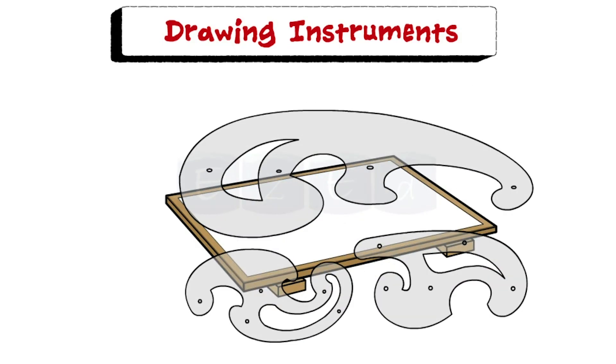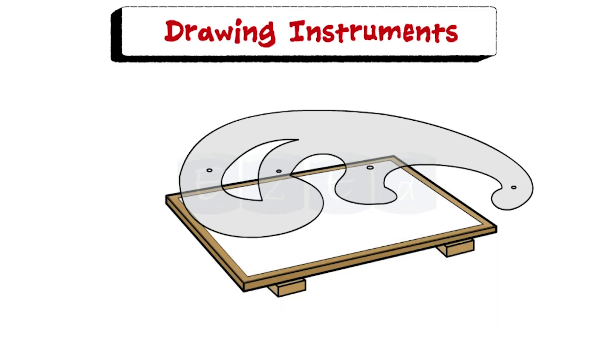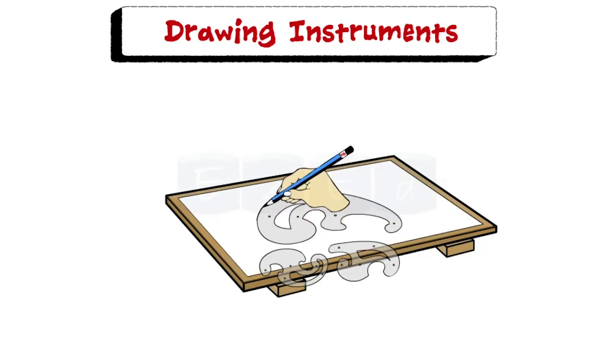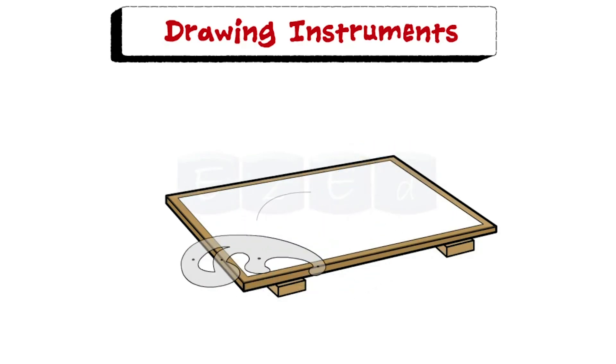Next instrument is a French curve. They are made in various shapes one of which is shown here. French curve is used for drawing curves which cannot be drawn with a compass. It is used to draw curves like ellipse, parabola, hyperbola etc.